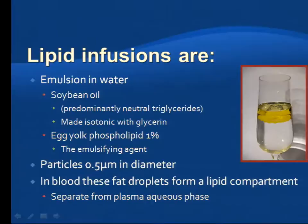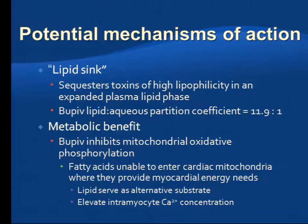Lipid emulsions are emulsions in water of soybean and egg yolk phospholipid that make tiny little particles — basically you're making a salad dressing in your blood, a lipid layer separating from the aqueous phase. The theory of how it works is this lipid sink: that lipid bilayer sequesters toxins of high lipophilicity, like local anesthetics and other things. Bupivacaine preferentially goes into that layer over an aqueous phase at a ratio of more than 11 to 1.